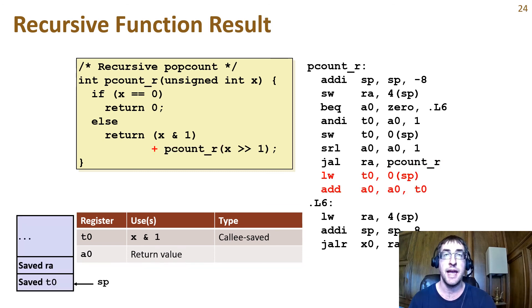So after the return we have to restore the value of x and 1 from where we previously saved it on the stack. We'll put the value back in t0 again. Then we add that value to the return value from the recursive call to pcount_r.